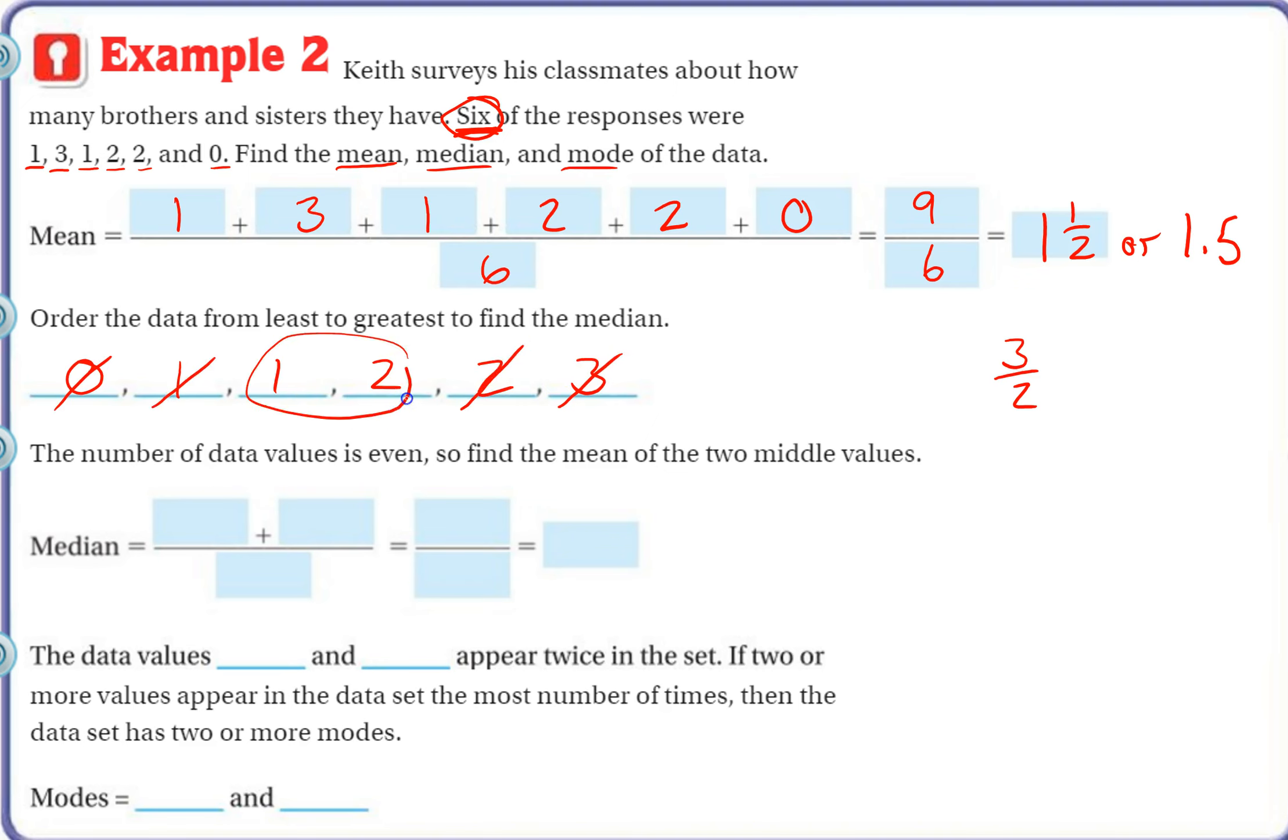And then we have two numbers in the middle, so we add those two numbers up, one plus two, and divide by two. So we get three halves again, which we've already said is one and one half, or 1.5.